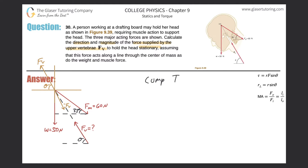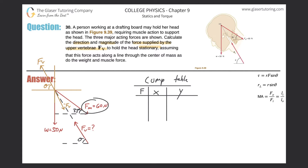To organize our thoughts, we'll use a component table with x and y values. We have two forces to resolve into a resultant: the force the muscles are producing, F_m, and the weight of the head. For the x-component of the muscle force, the origin is chosen here, and the force vector points down at an angle, so I need to find that particular angle.